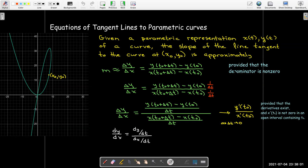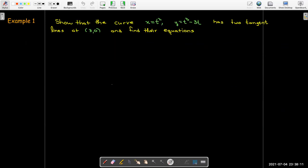In Leibniz notation, I could just write this as dy dx is dy dt over dx dt. So let's work through an example. We've got the curve with parametric equations x equals t squared, y equals t cubed minus 3t. And we'd like to show it has two tangent lines at the point 3 comma 0 and find their equations.